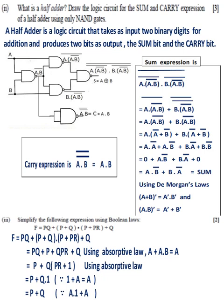Part 2: A half adder is a logic circuit that takes as input two binary digits for addition and produces two bits as output: the sum bit and the carry bit. Logic circuit for a half adder using only NAND gates is shown. The carry expression is A dot B bar bar equal to A dot B. The sum expression has been simplified using De Morgan's laws. It is equal to A dot B bar plus B dot A bar. Part 3: answer P plus Q.